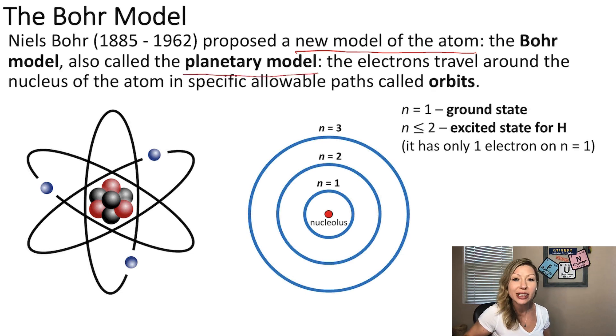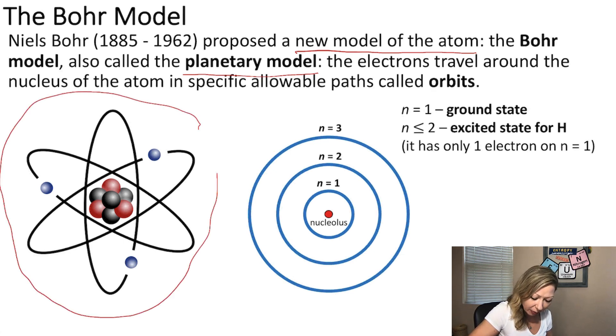And you guys are all familiar with this because you can see this literally everywhere. So this is an example of the planetary model of the lithium atom. We know that lithium has three electrons and all those three electrons are orbiting the nucleus in the center in specific allowable paths. And these are called orbits.